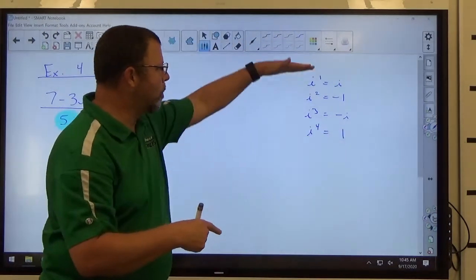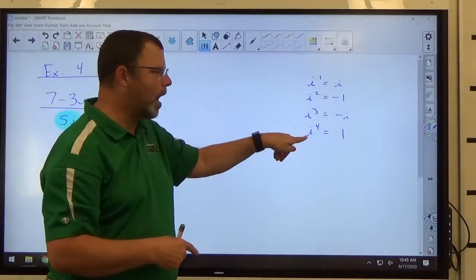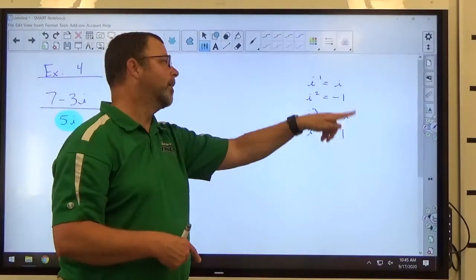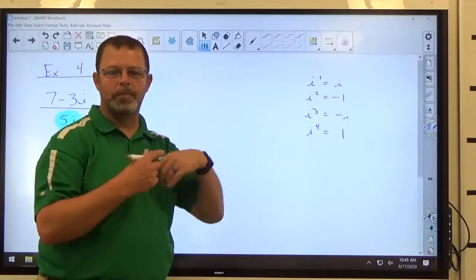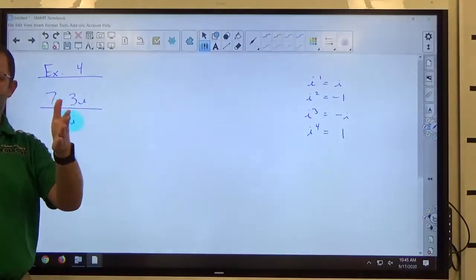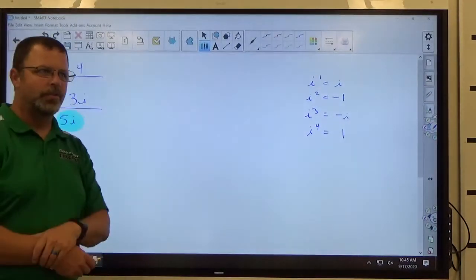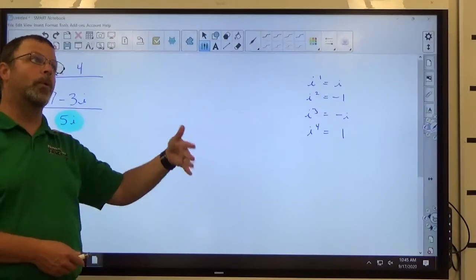And then i to the fifth power would just go back to i to the first power. You multiply i to the fourth, which is 1, times i, gets back to i to the first power. So every four powers of i creates 1, so it just basically keeps subtracting 4 from the power until you get between 1 and 4.